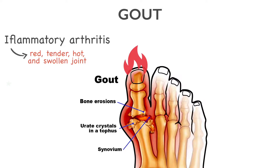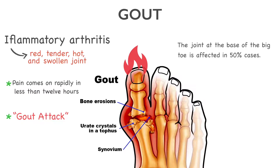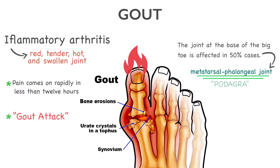Pain typically comes on rapidly in less than 12 hours after the initial symptoms. The affected joint is so hot, swollen, and tender that even the weight of the sheet on it may seem intolerable — this is commonly referred to as a gout attack. The joint at the base of the big toe is affected in about 50% of the cases. When the metatarsophalangeal joint is affected, it is called podagra.